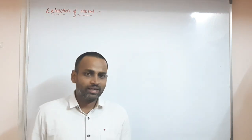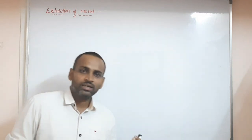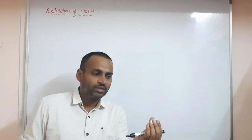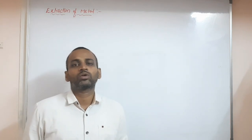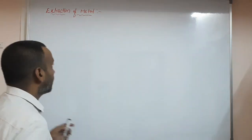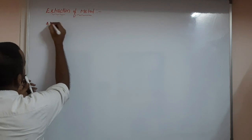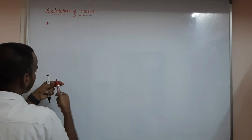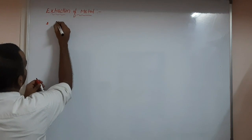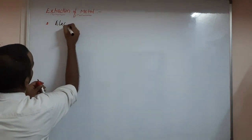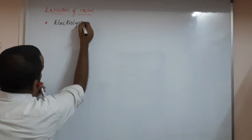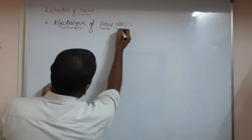NaCl, sodium chloride, is available as common salt — everybody knows that. So from that, how to extract the particular metal? If I want pure sodium, I will explain now. For that, there is a process — that is electrolysis. Electrolysis of fused NaCl. This is very important.